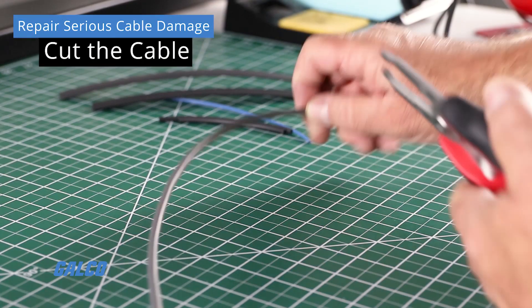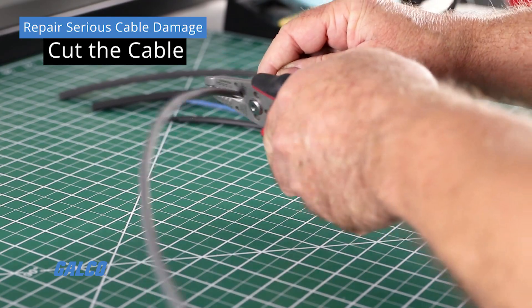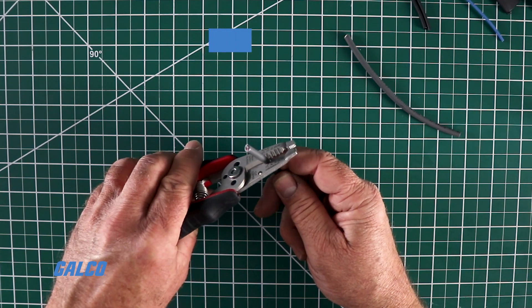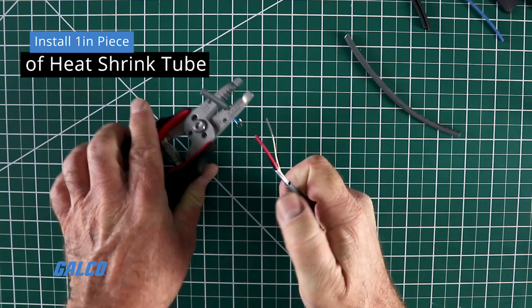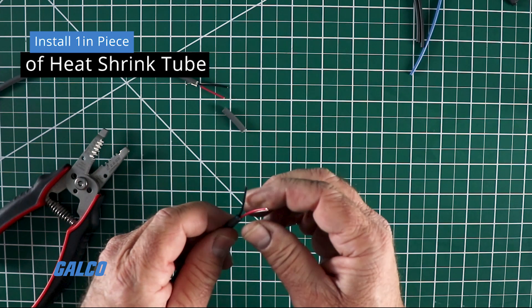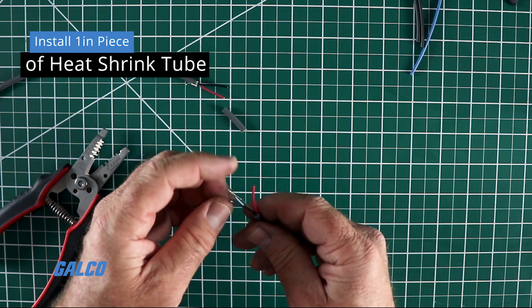To repair more serious cable damage, it may be necessary to cut the cable and expose enough of it to install a one inch piece of heat shrink tube on each conductor being repaired with room to solder. You should plan on about two inches minimum.